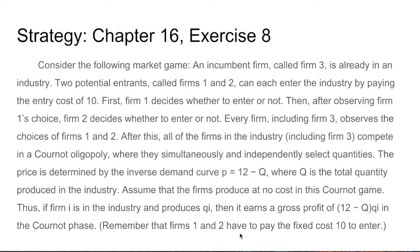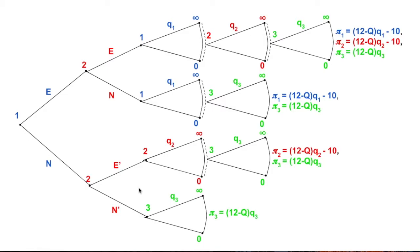The price is determined by the inverse demand curve that is p equals 12 minus Q, where Q is the total quantity produced in the industry. Assume that the firms produce at no cost in this game. Thus if firm i is in the industry and produces qi, then it earns a gross profit of (12 minus Q) multiplied by qi in the Cournot phase. Remember that firms 1 and 2 have to pay an extra fixed cost of 10 to enter the industry. That's the story, and if we put this in a graph it will be a sequential game.